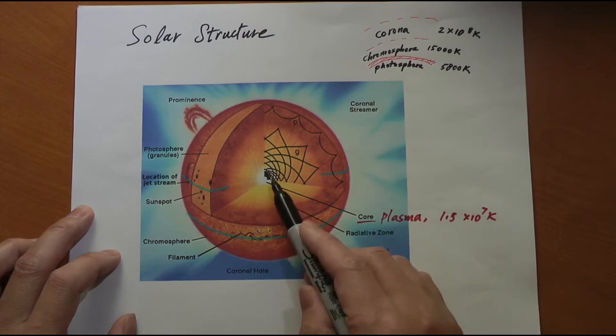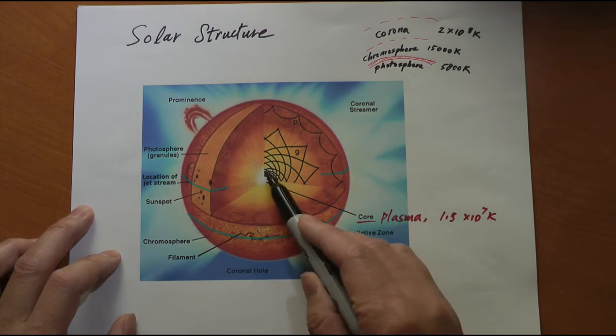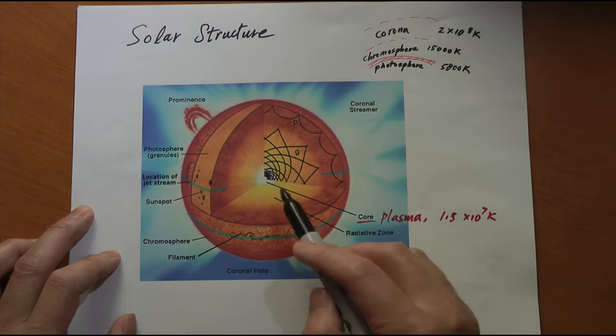At this temperature, the matter inside is plasma, not neutral atoms. And this is where the nuclear reaction, nuclear fusion goes on. And that is the energy source of our sun.